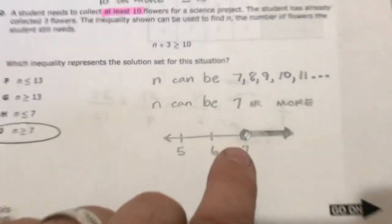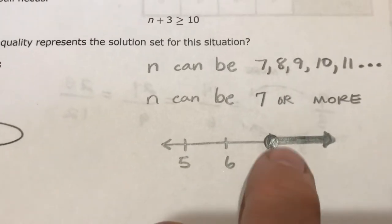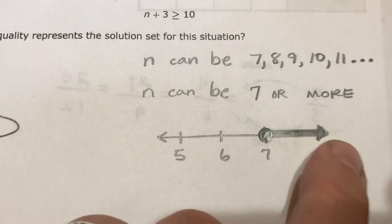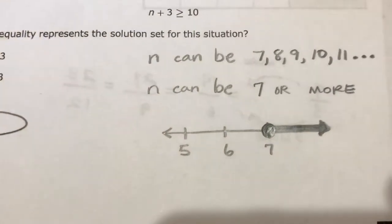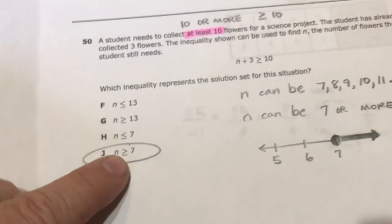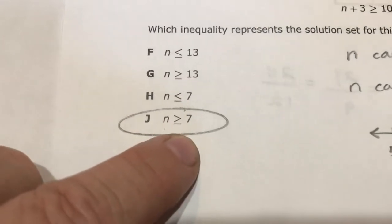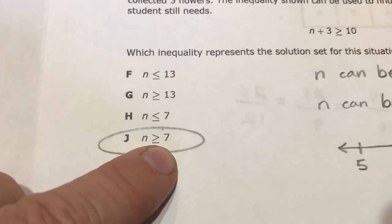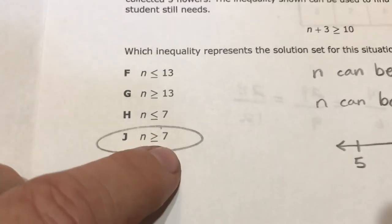So N has to be greater than 7, but it can also be equal to 7. So it was the 7 we needed, and not the 13. All right, 51 is a ratio question.